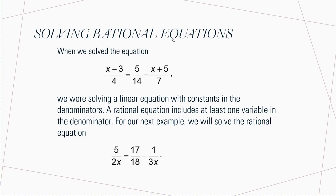We now want to talk about how you're going to solve rational equations. So what exactly is a rational equation? When you looked at something like X minus 3 over 4 is equal to 5 over 14 minus X plus 5 over 7, this is just a linear equation with fractions. You're solving a linear equation with constants in the denominators.